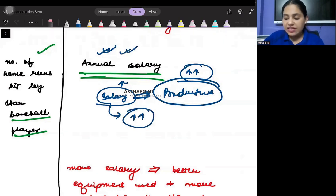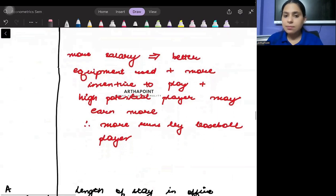So more salary would imply that there will be more runs that would be made by the players. It may reflect that they have more potential in them in a way. And also if you give them more salary then they will be able to do better gym practice and better equipments they will be able to buy. So that will also ensure that they can go ahead and make more runs.